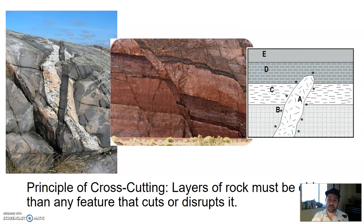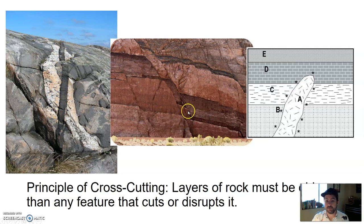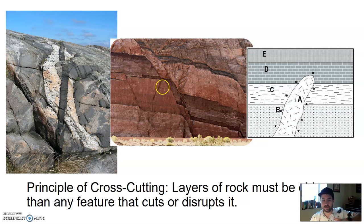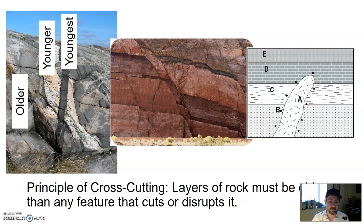The principle of crosscutting indicates that layers of rocks must be older than any feature that cuts or disrupts them. We have this big massive gray rock, white stuff cutting through it, and dark black stuff cutting through both. Or we have rock layers with faults cutting through. The principle of crosscutting says anything that cuts through or disrupts rock layers had to come later — the rock layers must be older, and the stuff that cuts through them must be younger. The black is the youngest because it cuts through both the surrounding gray rock and the white stuff, so it cuts through everything.